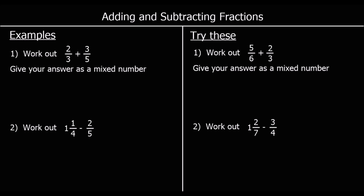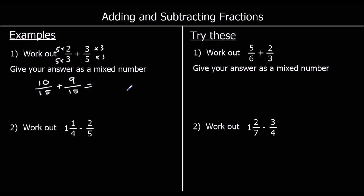Here we have some more examples — this time we're looking at fractions that go over one. We've got two-thirds plus three-fifths. We follow the same steps: make the bottom numbers the same before we can add them, so we can make them both fifteen by multiplying top and bottom of two-thirds by five, and top and bottom of three-fifths by three. That gives us ten-fifteenths plus nine-fifteenths. Ten of something plus nine of something is nineteen, so we've got nineteen-fifteenths.